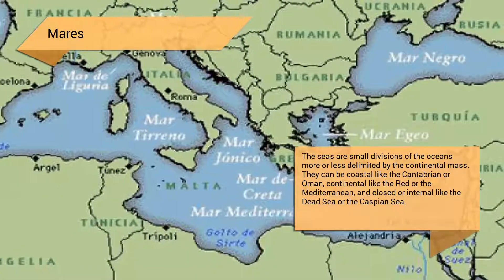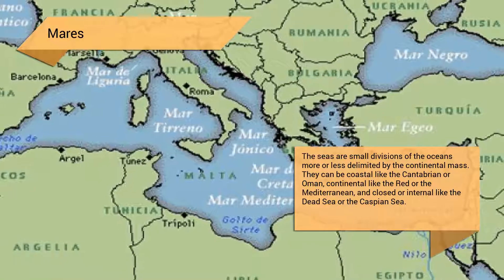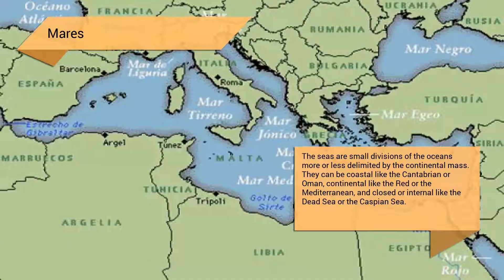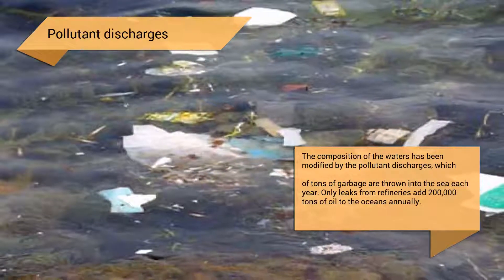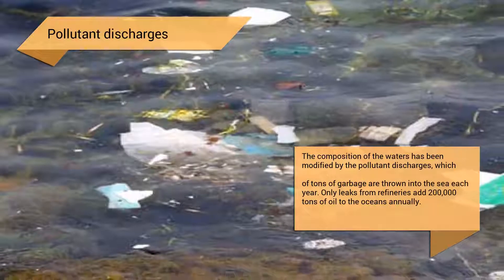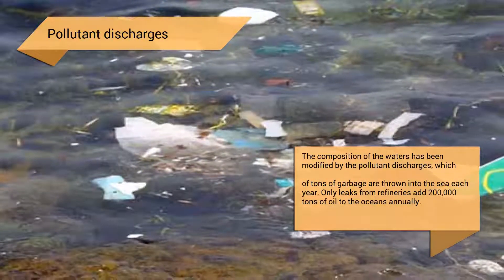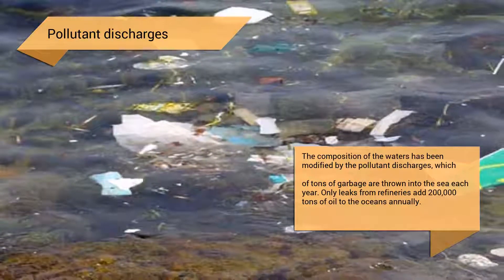The seas are small divisions of the oceans, more or less delimited by the continental mass. They can be coastal like the Cantabrian or Oman, continental like the Red Sea or the Mediterranean, and closed or internal like the Dead Sea or the Caspian Sea.